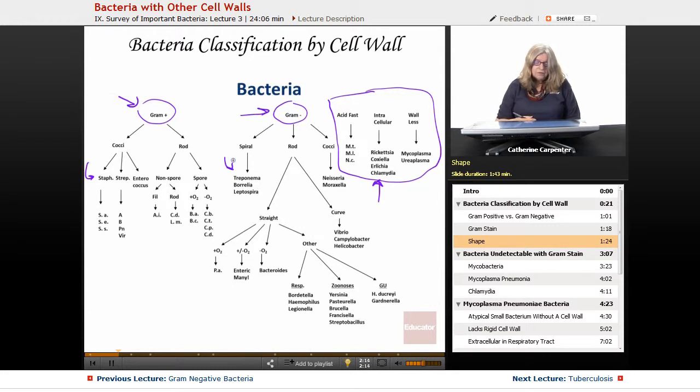The rods, we have the straight rods or the curves. And the curves are other comma shapes: vibrio, helicobacter, and campylobacter.